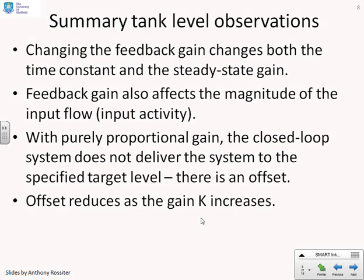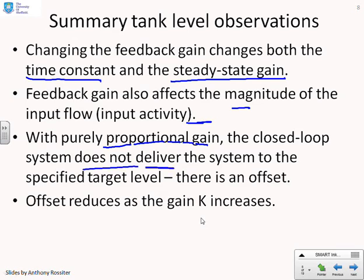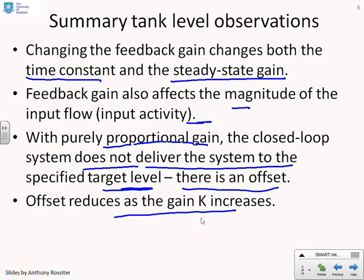So there's our summary. Changing the feedback gain changes both the time constant and the steady state gain. It did also affect the magnitude of the input but that's not something we're focusing on in this video. But with purely proportional gain, the closed loop does not deliver the system to the specified target level. There was always an offset. However, the offset was reducing as the gain K increased.